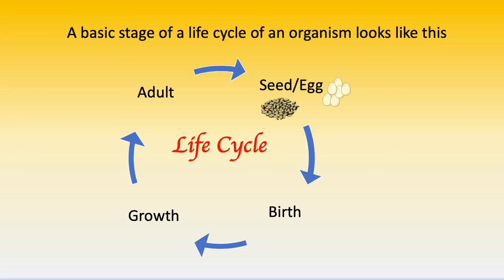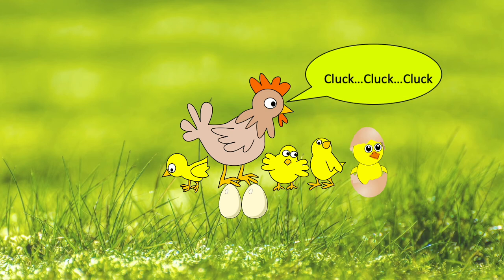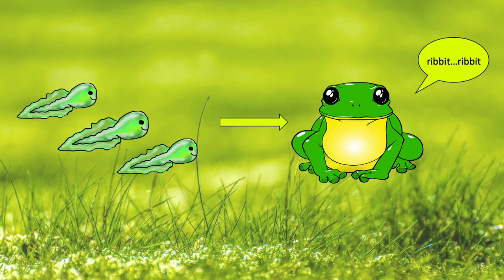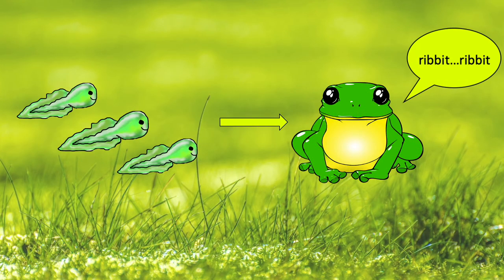All life cycles start with four basic stages, which start from a seed, egg, or live birth. Then they grow up and reproduce during their adulthood, and the life cycle repeats again and again. Some babies are born or hatch from eggs, like chickens and birds. Some look much like their parents, like kittens and horses, whereas other baby animals look much different from their parents, like tadpoles.